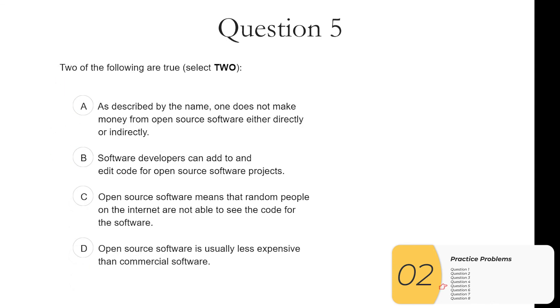Question five. Two of the following are true. Select two. A. As indicated by the name, one does not make money from open source software either directly or indirectly. This is not true. This is one of the big misconceptions about open source software. You can make money from open source software supporting it, teaching it, that kind of thing, just not by selling the code. So A is not true.